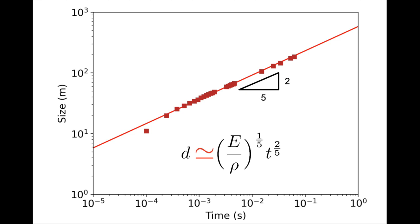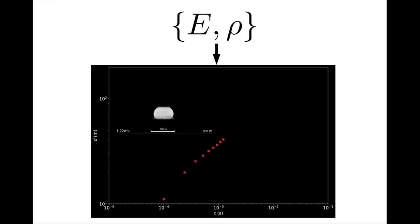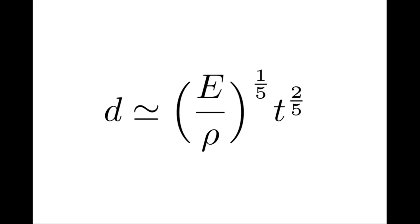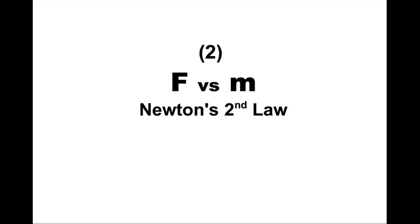We can safely say that the dynamics of this explosion are due to the struggle between the energy output of the bomb E and the density of the surrounding air rho. The energy is in the numerator — it is driving motion. The density is in the denominator — it is slowing down motion. The energy is the impaling factor and the density is the impeding factor. The impaling factor is a generalization of the concept of a force, and the impeding factor is a generalization of the concept of inertial mass. This exotic equation is actually not far from f equals ma — Newton's second law, the bedrock of classical mechanics.